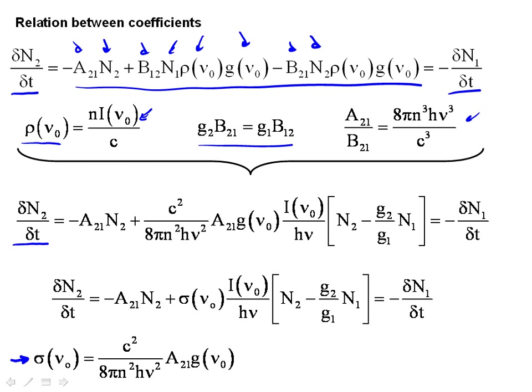We define a term sigma at some frequency, and we call this term a cross-section. And know this. You are expected to know this. And if I substitute this sigma back into this equation, I can simplify it.